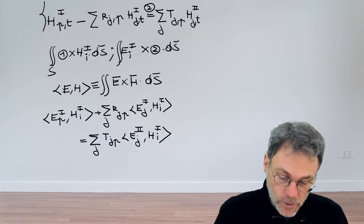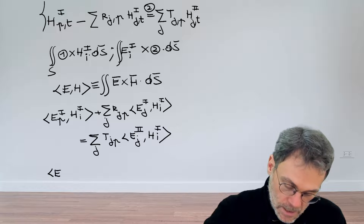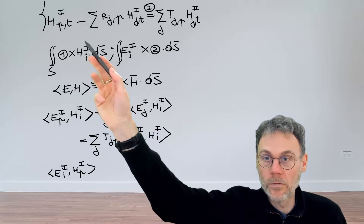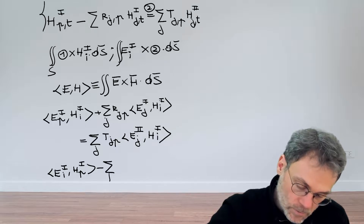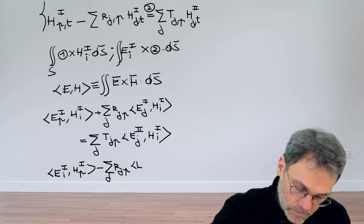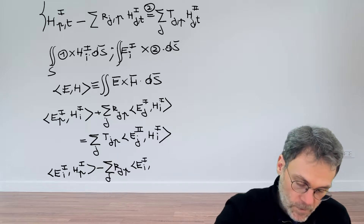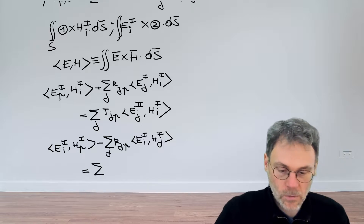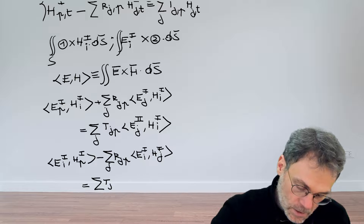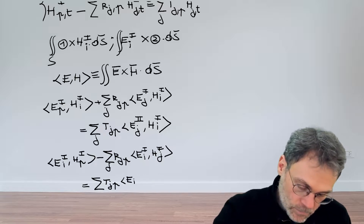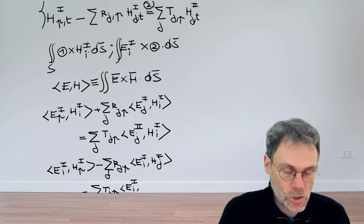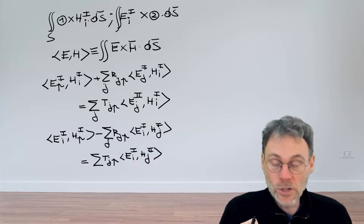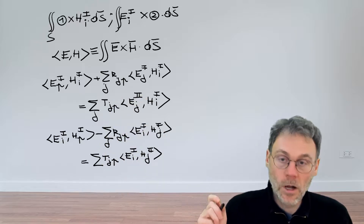We play a similar game with equation 2, multiplying by E_i on the left-hand side. This gives ⟨E_i1, H_p1⟩, then minus the sum over j of r_jp times ⟨E_i1, H_j1⟩, and finally for the transmitted fields, a sum over j of t_jp times ⟨E_i1, H_j2⟩. These are again just linear relationships between our unknowns.